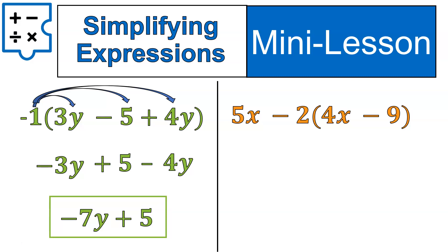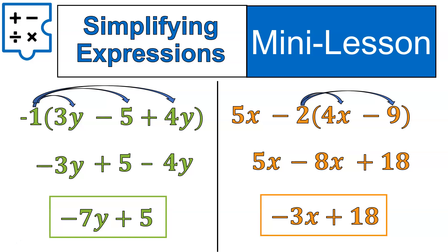In the next expression, we have a 5x by itself. That's just going to be written down. Next, we'll start multiplying that negative 2 times each term inside the parentheses. Negative 2 times 4x will give us negative 8x. Negative 2 times negative 9 gives us a positive 18. And then we join together the like terms. 5x minus 8x gives us negative 3x. And positive 18 remains the same at the end. So there we go. That is our final answer for this question.